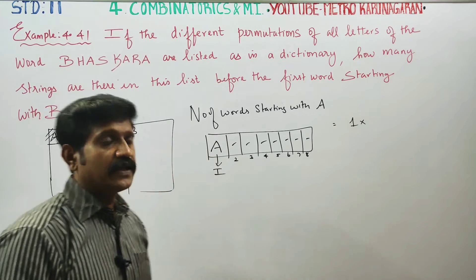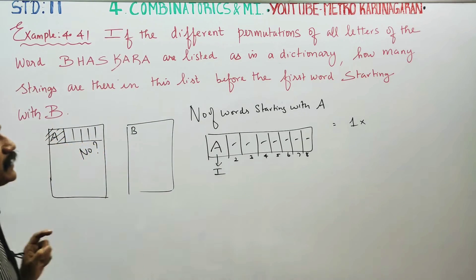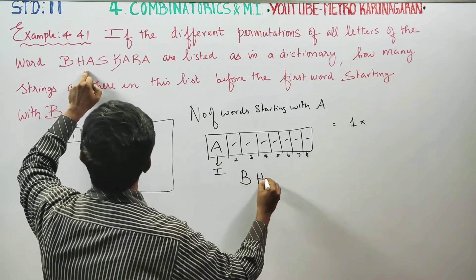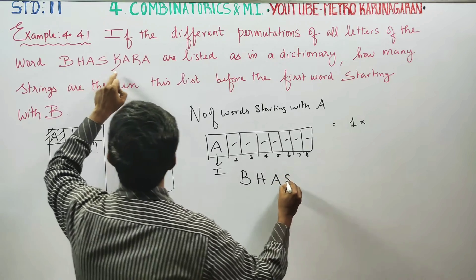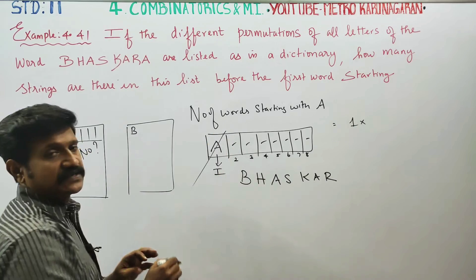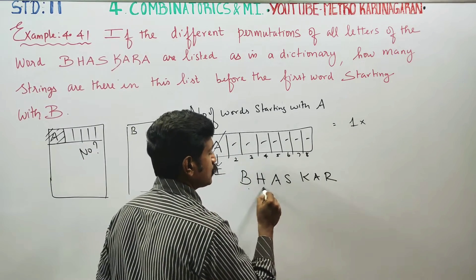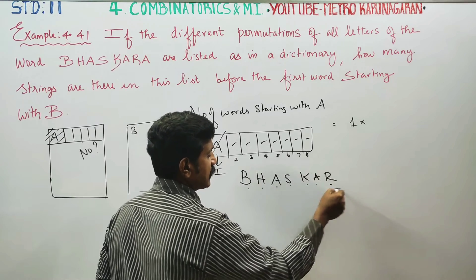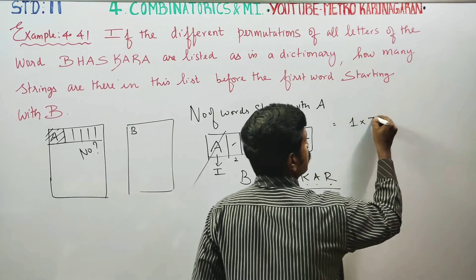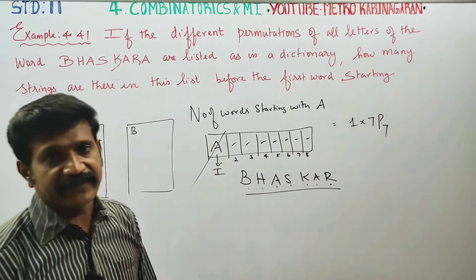7 vacancy can be filled with 7 letters: B, H, A, S, K, A, R. Already one A is fixed. 1, 2, 3, 4, 5, 6, 7 letters. 7 places can be filled by 7 letters in 7P7 ways.